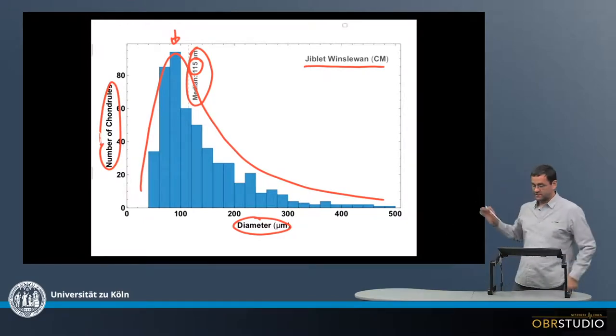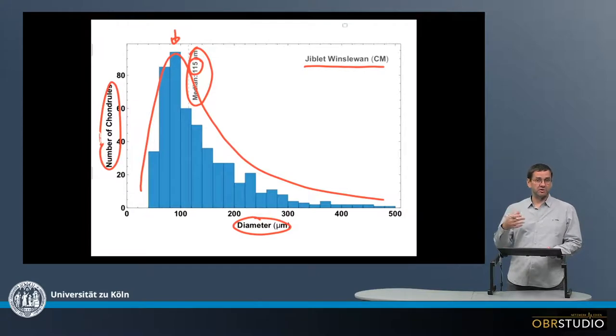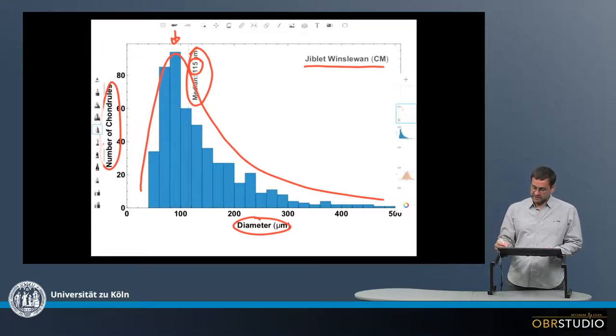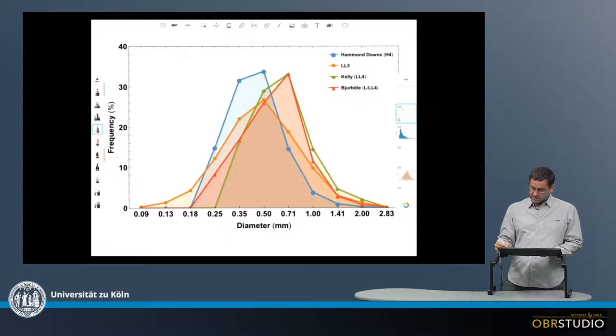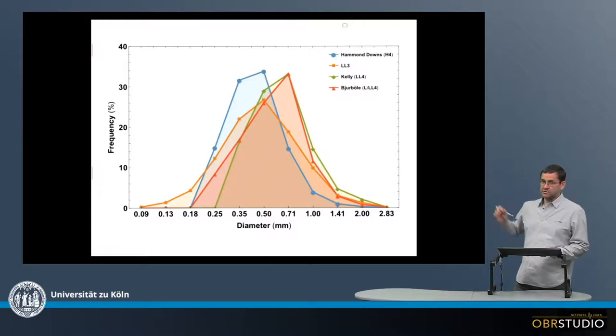As I said, this is quite a typical distribution, log-normal unimodal, log-normal to normal for chondrites. This can be seen in this other chondrule size plot here as well. In this case, on the x-axis there is the diameter in millimeter, not micrometer, so these chondrules are certainly larger.